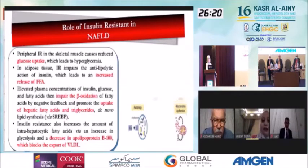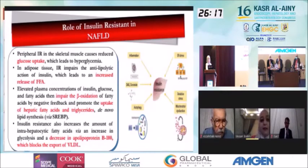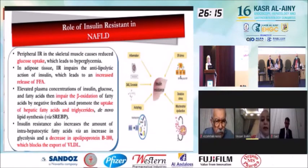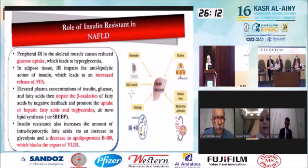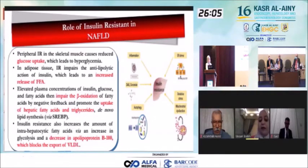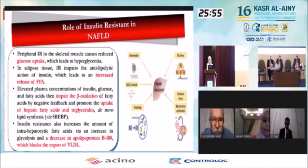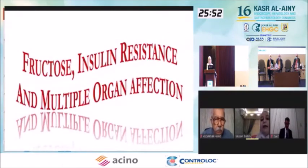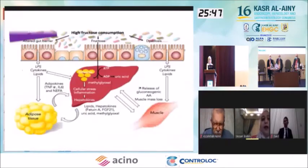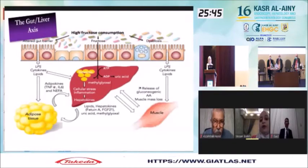Uric acid stimulates free radicals, gluconeogenesis, and all these factors lead to insulin resistance. So now we have two factors: fructose and insulin resistance. Insulin resistance affects fat metabolism by reducing glucose uptake in muscles, increasing release of free fatty acids from adipose tissue, increasing hepatic fatty acids, and reducing apolipoprotein B100, thereby reducing VLDL export.